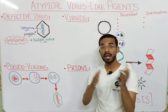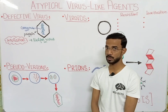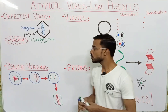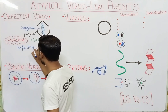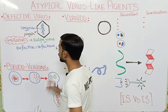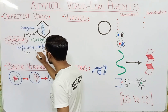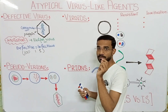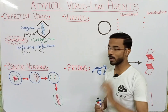Defective viruses actually form along with the replication of the infectious virus — this point is very important. The ratio of defective virus to infectious virus is 100 to 1. It means if you see one infectious virus, then along with it you will see 100 defective viruses.